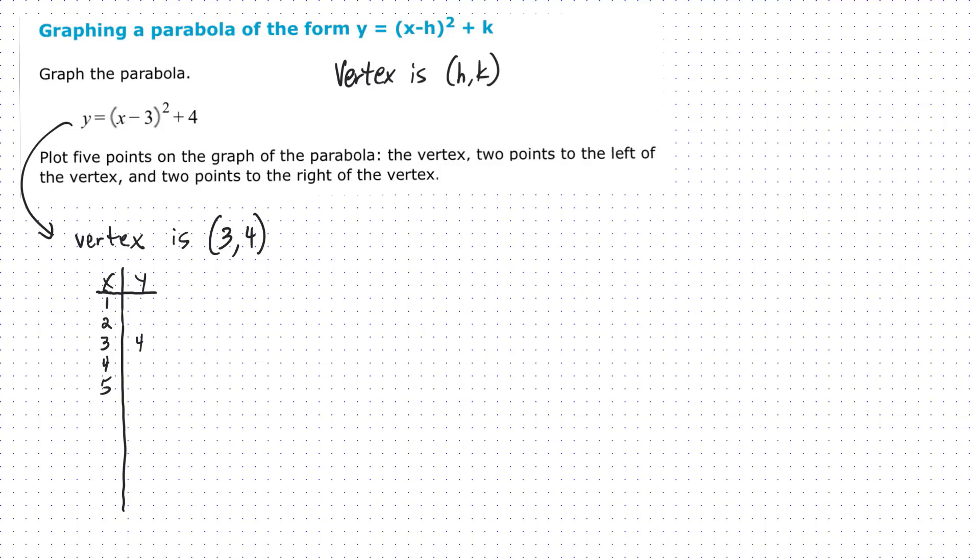When x is one, we can actually see that y equals one minus three quantity squared plus four. How much do we have there? Negative two quantity squared is positive four. So y is eight. So when x is one, y is eight.